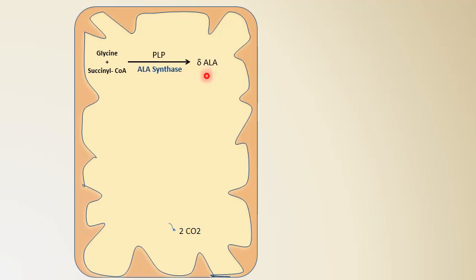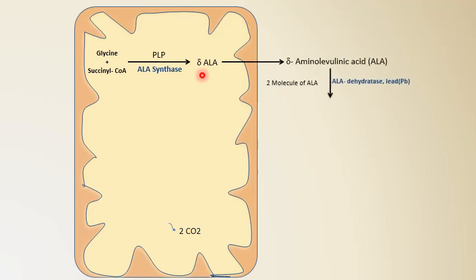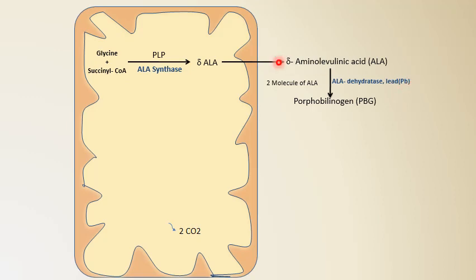That is the first step of heme synthesis, producing delta-aminolevulinic acid. The second, third, and fourth steps occur in the cytosol. In the second step, two molecules of delta-aminolevulinic acid give rise to porphobilinogen with elimination of one molecule of water; the enzyme is ALA dehydratase. This ALA dehydratase enzyme is also inhibited by lead. So in lead poisoning, the level of ALA can be estimated in the urine of the patient, because ALA accumulates and is excreted in urine when ALA dehydratase is inhibited.